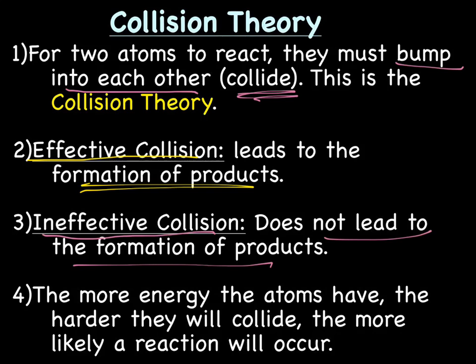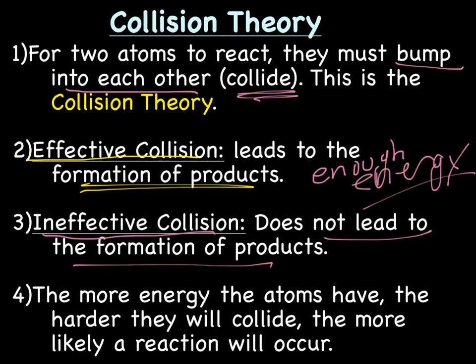How do you get an effective collision, one that leads to the formation of products? The atoms have to hit each other hard enough for a bond to be formed. The more energy the atoms have, the harder they're going to collide, and the more likely a reaction will occur. For an effective collision, you need to have enough energy so that the atoms hit each other hard enough to form a bond, which produces a product — meaning a reaction has occurred.